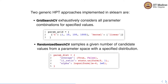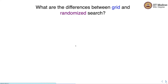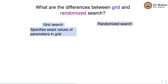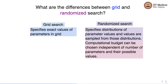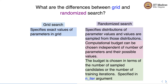The difference between RandomizedSearchCV and GridSearchCV is that in GridSearchCV we specify the parameter values to try explicitly, whereas in RandomizedSearchCV we specify the distributions from which to sample those values and also specify how many candidate values to sample. GridSearchCV specifies exact values; RandomizedSearchCV specifies distributions. In RandomizedSearchCV the computational budget can be chosen independent of the number of parameters, specified via the n_iter argument.